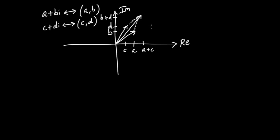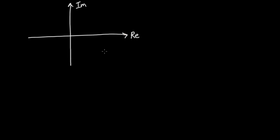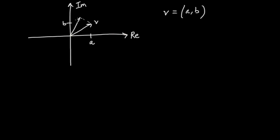The question we're going to concern ourselves with in this video is: how do we take one of these vectors in two-dimensional space and rotate it mathematically? Can we come up with a computation to rotate one of these vectors? Let's suppose I have some arbitrary vector V with coordinates AB. What I'm looking to do is rotate V to some new vector, which I'll call V prime, through some angle theta.